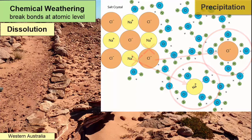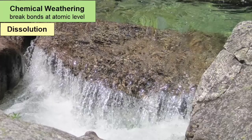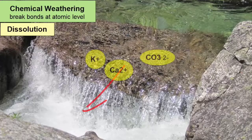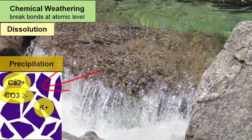The opposite of dissolution is precipitation — the combining of ions to form solid crystals that settle out of water. Precipitation happens when waters rich in dissolved ions evaporate, taking the water molecules away and allowing the ions to find each other again. If the water involved with dissolution is flowing water, like rainwater or river water, the dissolved ions will be removed from the rock and taken to a new environment where precipitation may later happen, for example as cement between sediment grains.